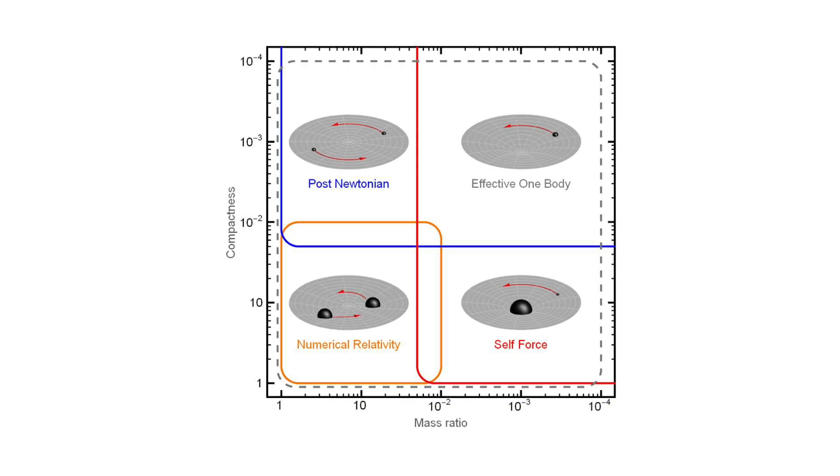So the basic idea of the effective one-body approach was instead of describing the dynamics and the gravitational radiation emitted by a binary system, to replace this complicated problem by something that looks simpler. For the motion one is replacing this by the motion of a very small particle, a test particle,